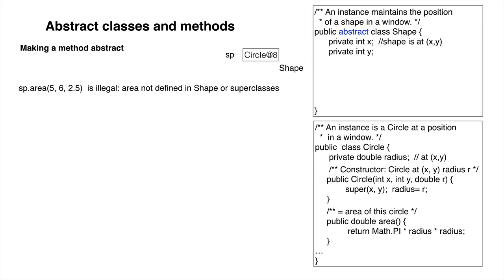Your program won't compile if it has a call sp.area because method area is not defined in Shape or Object. Java has this rule because it wants to be sure that the method exists at runtime. It wouldn't exist at runtime if some subclass of Shape didn't declare area, and there's no way to guarantee that.